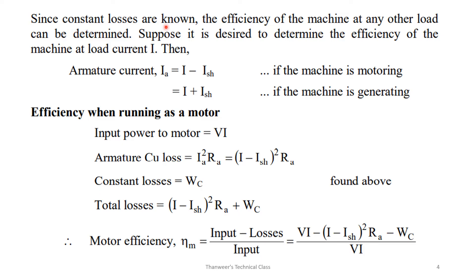Since the constant losses are now known, the efficiency of the machine at any other load can be determined. Suppose it is desired to determine the efficiency at a load current I. Then the armature current I_A = I − I_SH if the machine is motoring, or I_A = I + I_SH if the machine is generating.